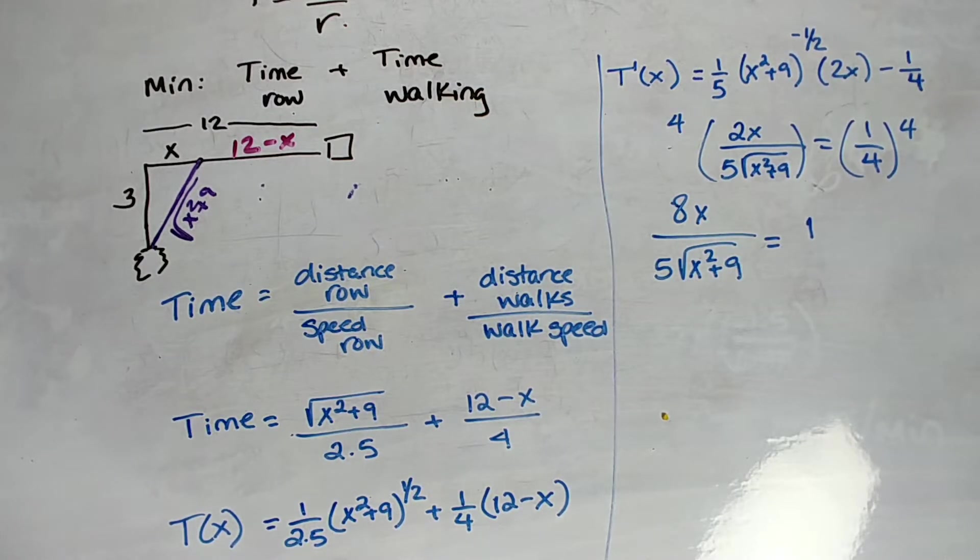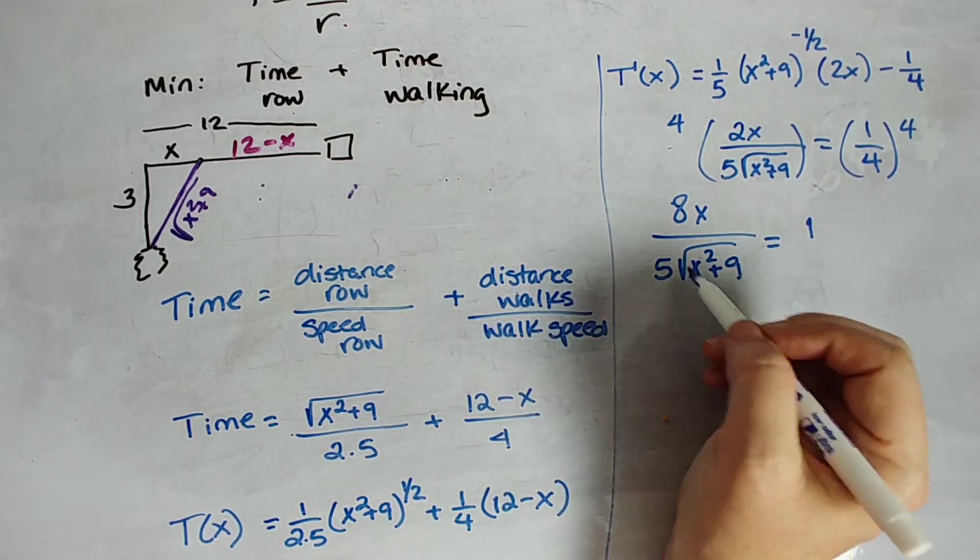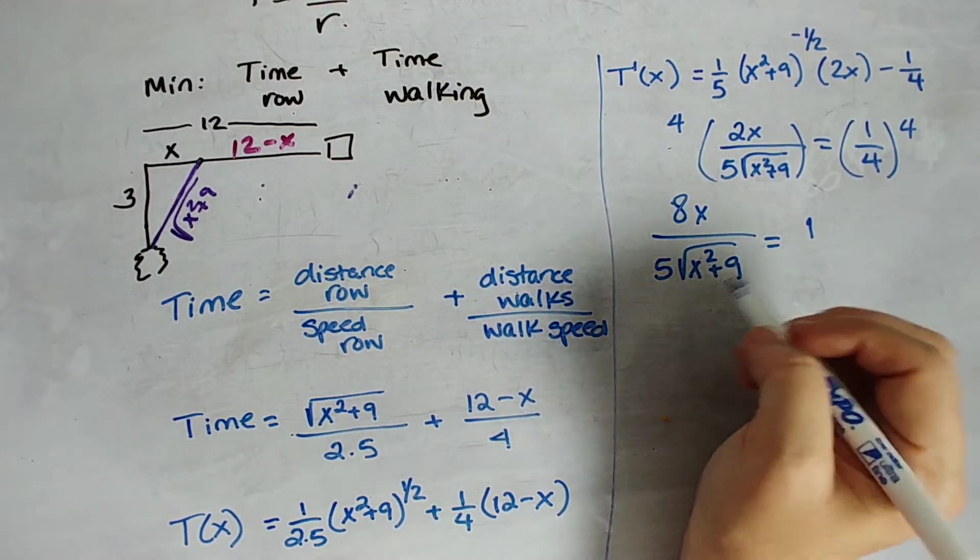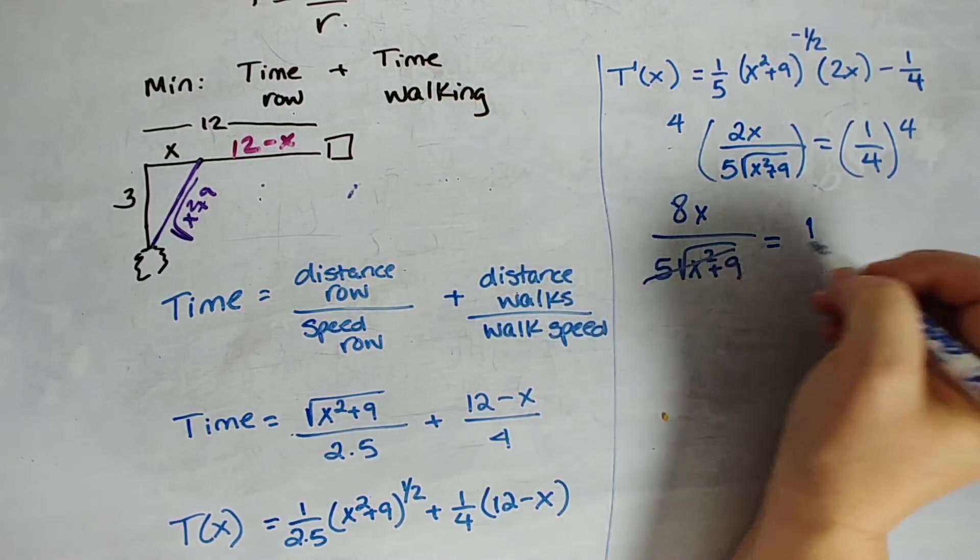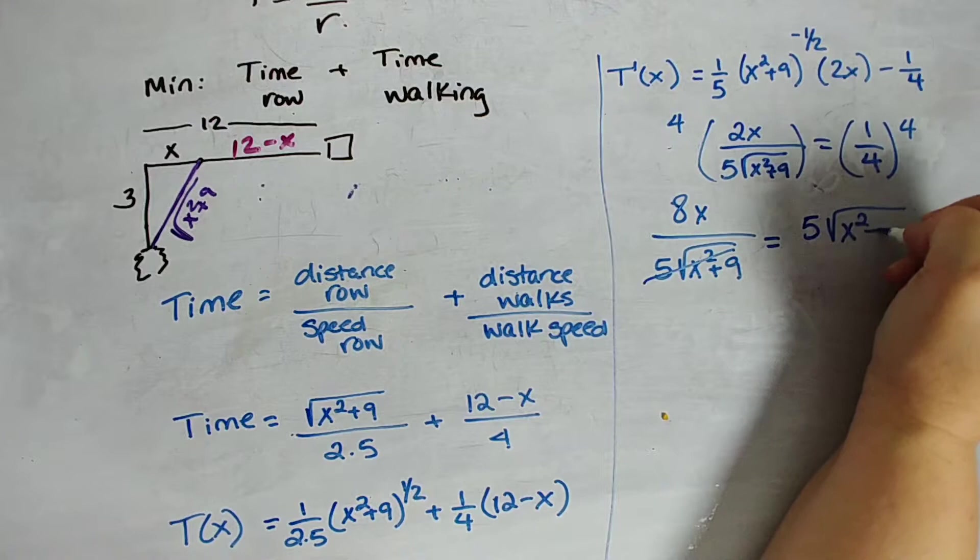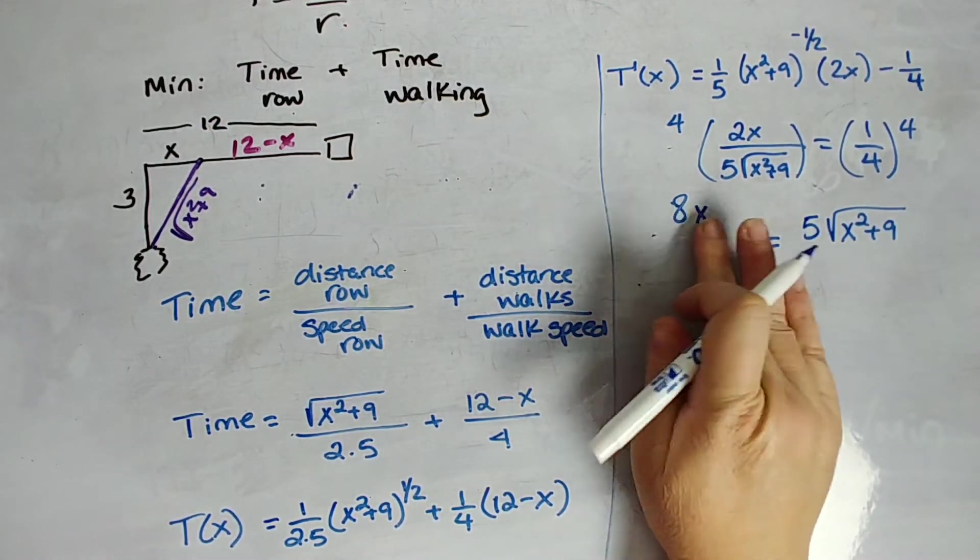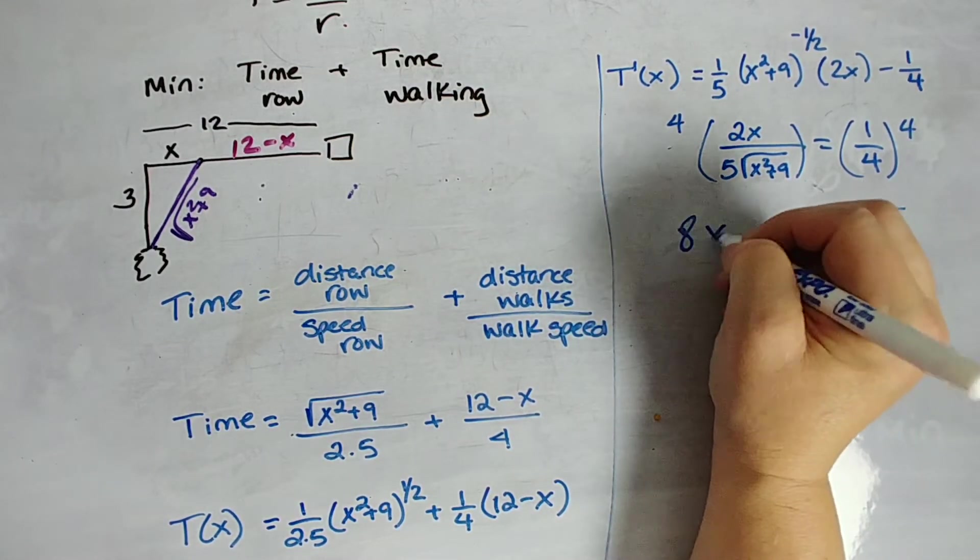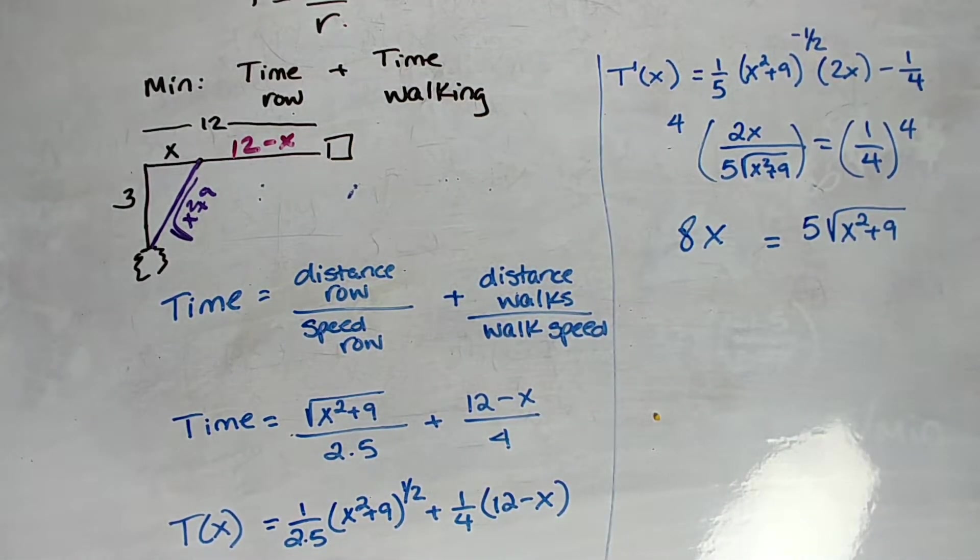Now, I would say normally you can simplify the 2 going into the 4, but it's neither here nor there, because we need to get rid of the 4, the entire denominator. So let's just multiply by 4, and let's just get 8x over 5 square root of x squared plus 9 equals 1. It's better. It doesn't look better, but it is. And so at this point, what I want to do is just move that whole denominator. So I'm going to multiply both sides by 5 times the square root of x squared plus 9.